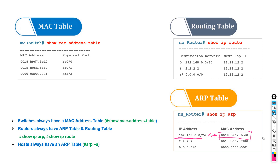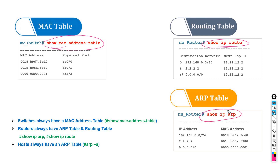These are the commands used on Cisco devices: 'show MAC address table' to find MAC addresses, 'show IP route' to find routing information, and 'show IP ARP' to find the ARP table. On computers, we can use 'ARP -a' in CMD, which shows us the ARP table.